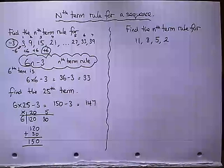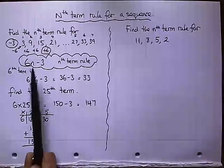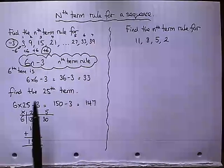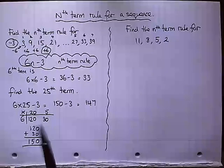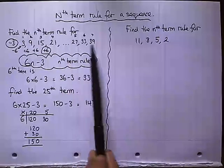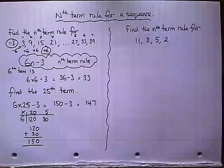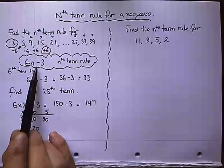So we try and work out the nth term rule whenever we need to find a bigger term. You could, if you wanted to, write out this sequence up to the 25th term. But of course, it could be possible that you're going to make a mistake at some stage. So I always recommend you try and work out this nth term rule.